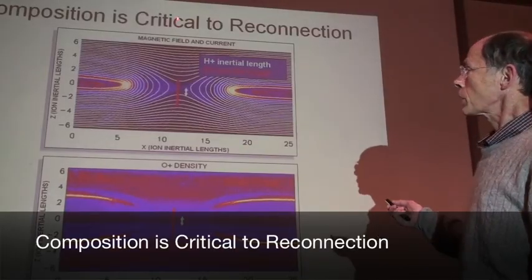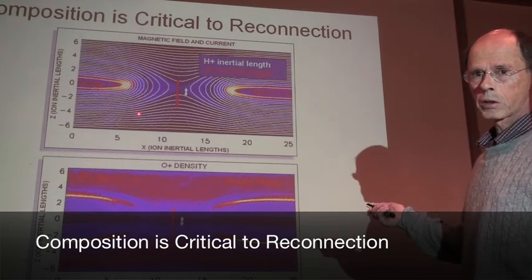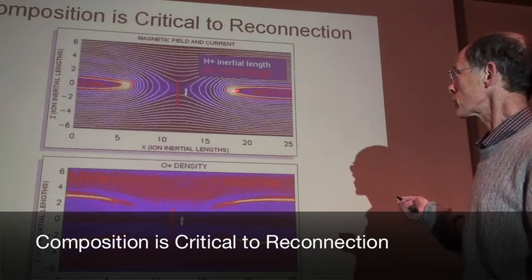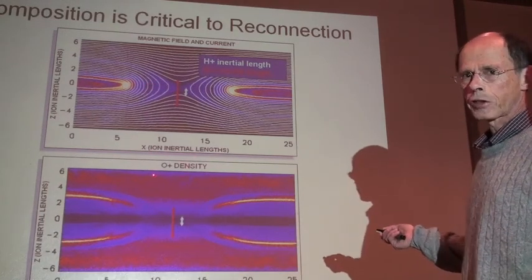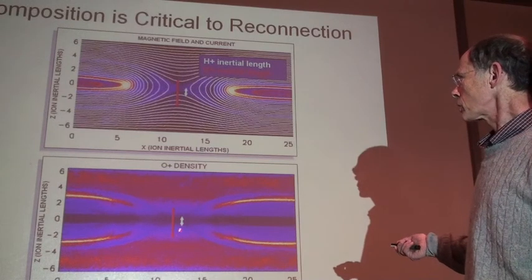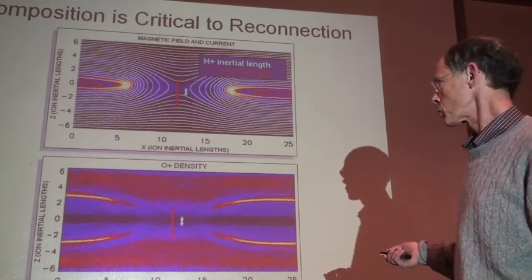During the process of reconnection, the ions flow in from above and from below. During reconnection, they're accelerated and energized and flow out to the left and to the right. What you see here shows the oxygen density and the relative scale sizes of the oxygen and hydrogen ions when they're in the reconnection region.